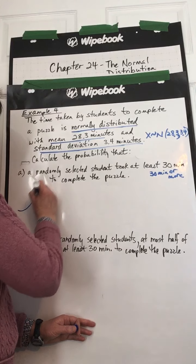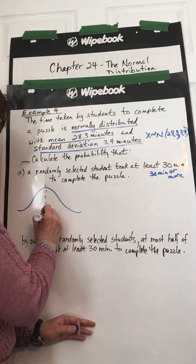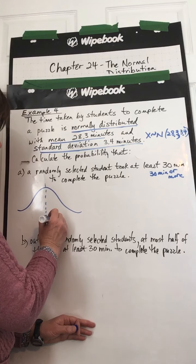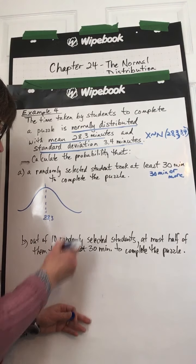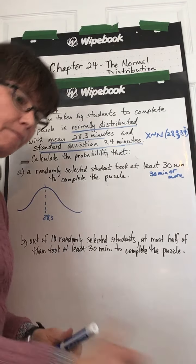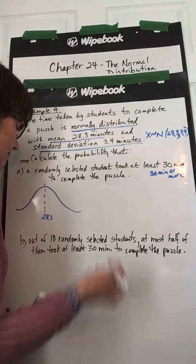Which means our lower bound would be 30, and our upper bound would be infinity, or that 9 times 10 to the power of 999. All right, let's just represent this on a diagram. The mean is 28.3, and we're looking for 30 or more, so 30 is on the right-hand side of that mean.